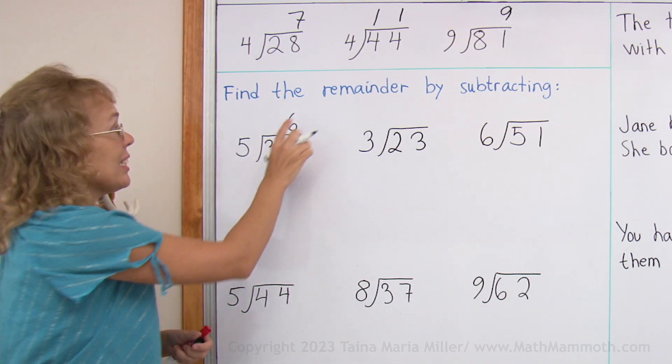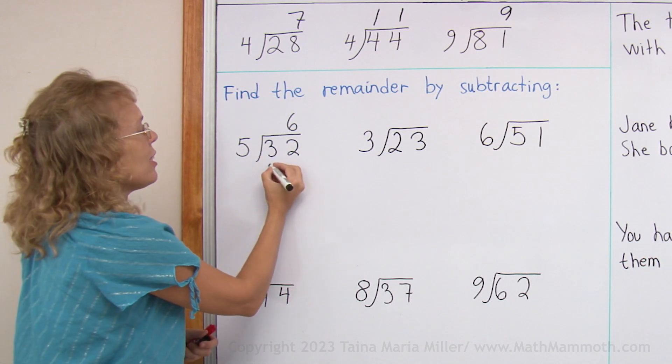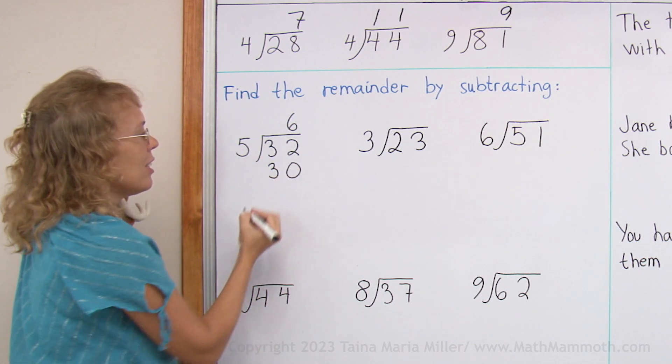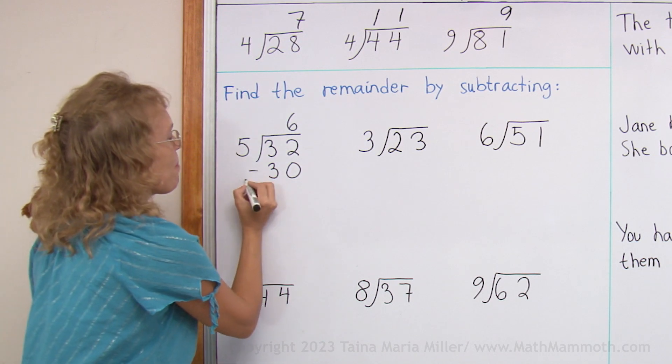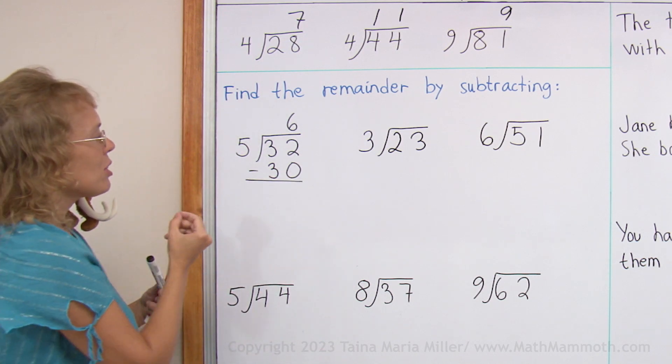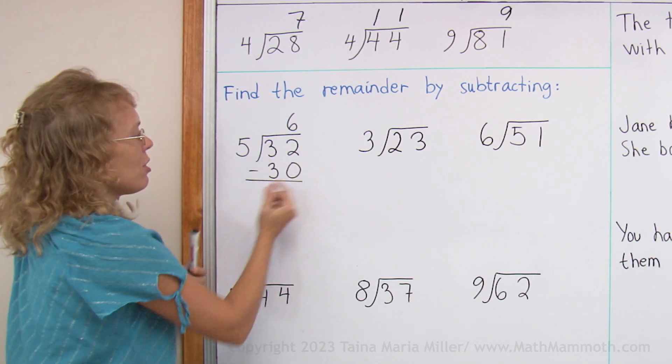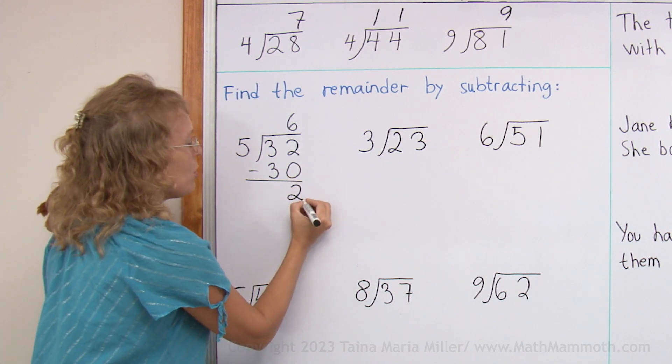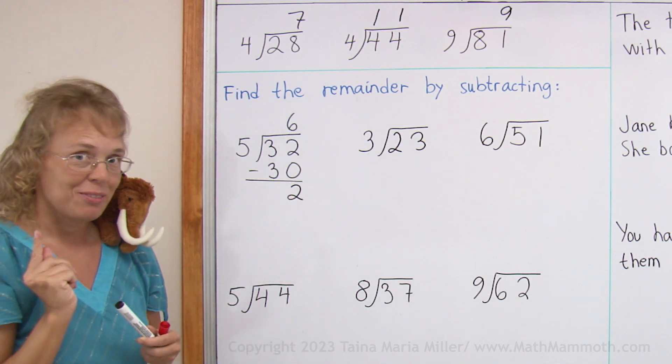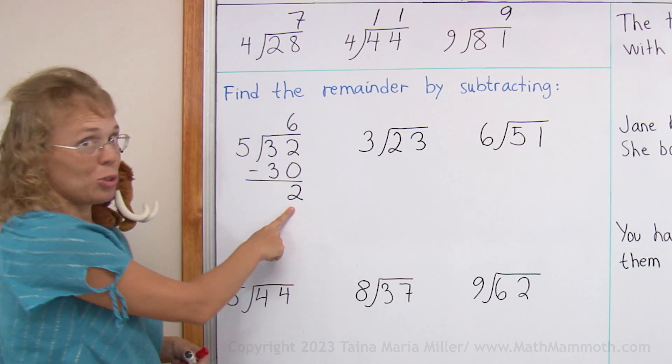Then I multiply 6 times 5 equals 30 and write it under here. So I'm gonna get ready to subtract. I'm ready to subtract now. 32 minus 30 equals 2, and that is my remainder. The answer is therefore 6 remainder 2.